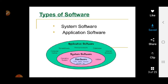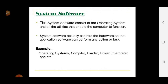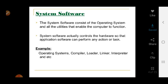System software works as a bridge between hardware and application software. It consists of the operating system and all utilities that enable the computer to function. System software actually controls the hardware so that application software can perform any task. Without system software, there will be no functionality performed by the computer.